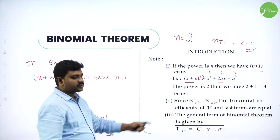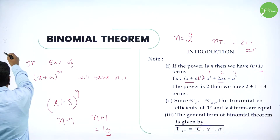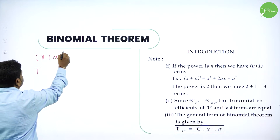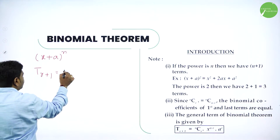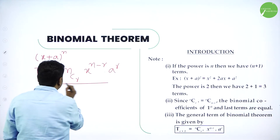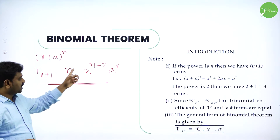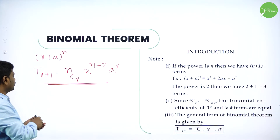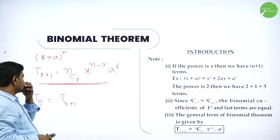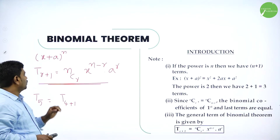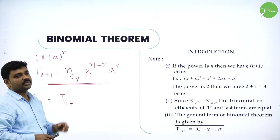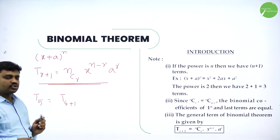The general term is most important — we will do all problems based on it. General term is T(r+1), and in the expansion of x plus a power n, T(r+1) equals nCr times x power n minus r times a power r. This is a key formula. For example, if I want the 5th term, T5 equals T(4+1), so r is 4, and T(4+1) equals nC4 times x power n minus 4 times a power 4.